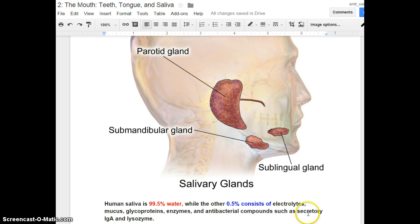such as secretory IgA and lysozyme. We're not going to worry about that, but this is where our salivary glands are located, and that's where saliva is created.